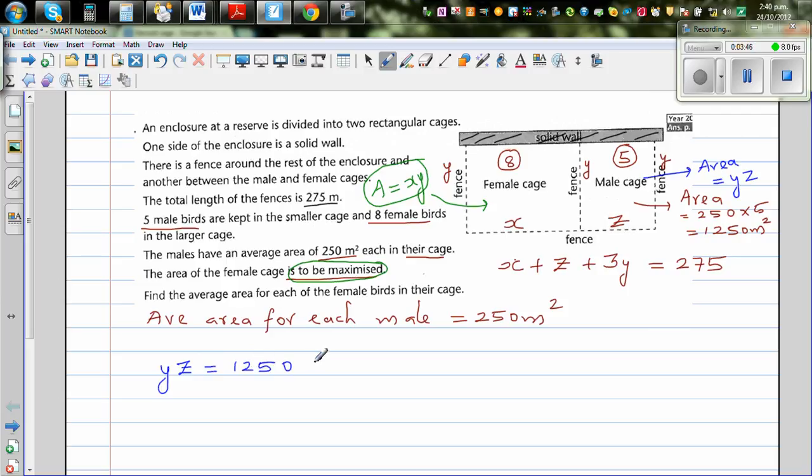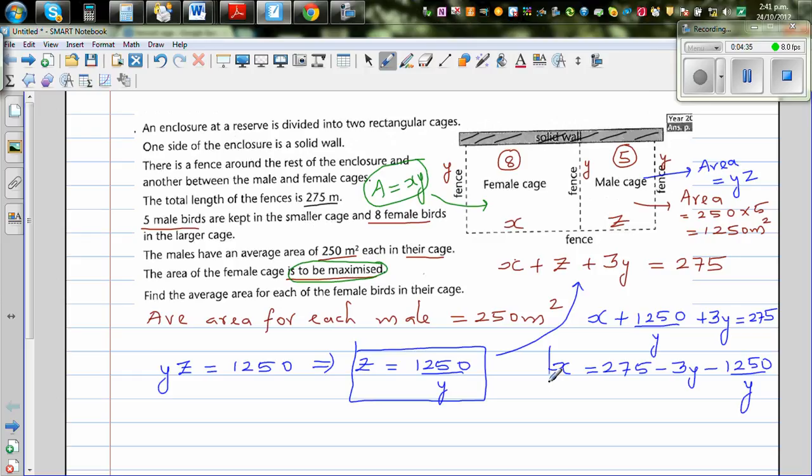Can you write this area? The base times height. So you can say YZ is the area of this male cage, so YZ equals 1250, which implies Z equals 1250 divided by Y. I've written Z in terms of Y. So I'm going to put this in this equation. X plus 1250 over Y plus 3Y is equal to 275.